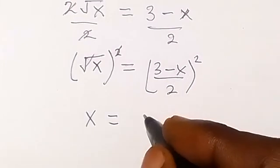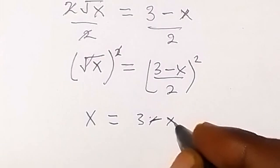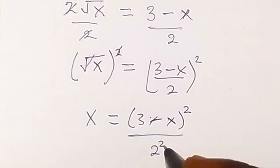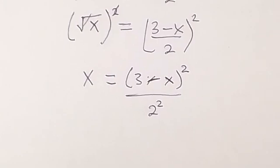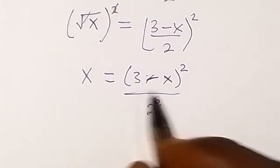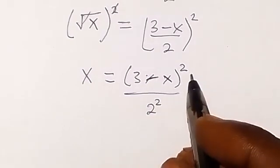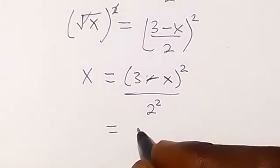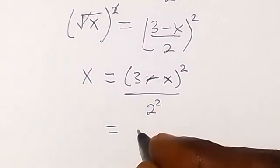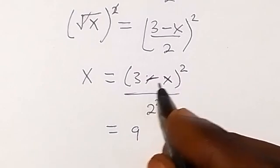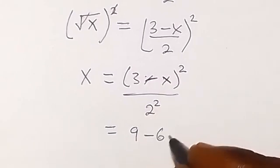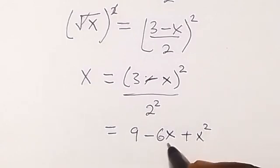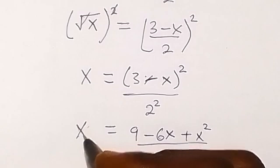We square (3 minus x), that's (3 minus x) squared, then over 2 squared. That's one of the laws of indices. Now expanding (3 minus x) squared gives us 3 squared which is 9, then minus 2 times 3 times x, that's minus 6x, then plus x squared. And 2 squared is of course 4, so x equals that.